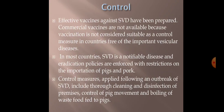For control of SVD: effective vaccines have been prepared but commercial vaccines are not available, as vaccination is not considered a suitable control measure in countries free of important vesicular diseases. In most countries, SVD is a notifiable disease and eradication policies are enforced with restrictions on importation of pigs and pork. Following an outbreak, control measures include thorough cleaning and disinfection using mild alkalis and acids, control of pig movement, and boiling of waste food fed to pigs.